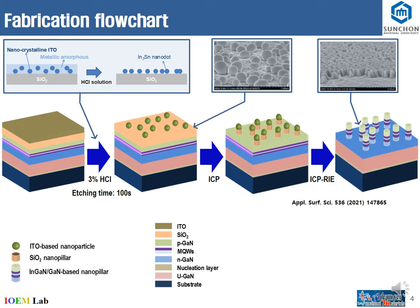In the fabrication flowchart, we use a planar LED and then deposit a silicon dioxide layer and ITO layer. Then we put it in 3% hydrochloric acid solution to fabricate the self-aligned nanodots. Then we use ICP to transfer the nanodot pattern to the silicon dioxide. After that, we use ICP-RIE etching to fabricate nanostructures like non-polar nanopillar structures, which are shown here.